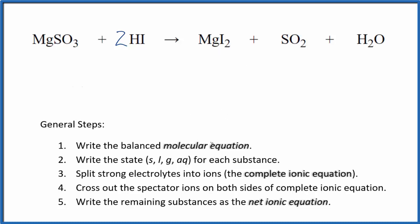Now we can write the state for each substance. For magnesium sulfite, we're going to write aqueous. It's not super soluble, but some of it will dissolve. Hydroiodic acid is a strong acid, that's aqueous.